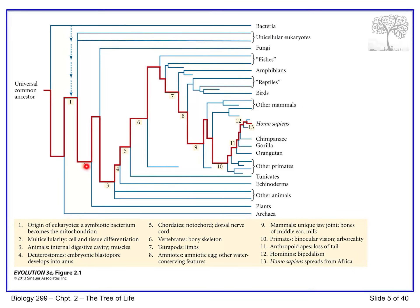Characteristic number two: multicellularity and cell and tissue differentiation. Unicellular eukaryotes like the protists do not have multicellularity, but everything from fungi down to plants does. Moving further to number five — chordates: the notochord and dorsal nerve cord. That feature evolves at a specific node; all groups before that node lack it, but everything beyond — from fishes all the way to tunicates — would have it.